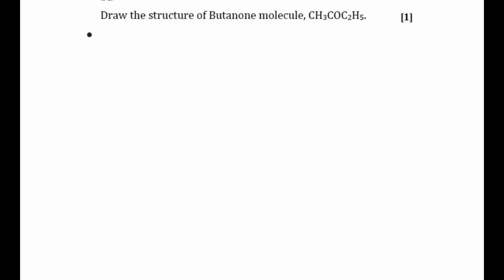Let's try to solve this question. In this question we have to draw the structure of butanone. First of all, the word 'bute' suggests there will be four carbon atoms, and 'O' means that it is a ketone. There will be the presence of C double bond O.